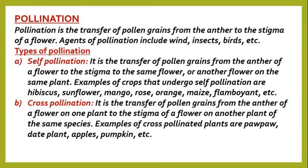Examples of cross-pollinated plants include the purple tree — we have a male purple tree and a female purple tree. The male purple tree does not bear fruits; its flowers are elongated and have long stalks. The female one bears fruits. Date plants, which are common in Arab countries and look like palm trees, also undergo cross-pollination, as do apples and pumpkins.